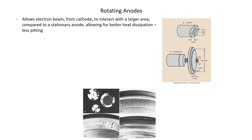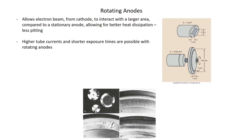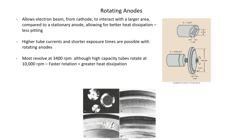Rotating anodes allow the electron beam from the cathode to interact with a larger area compared to a stationary anode, allowing for better heat dissipation and less pitting. You can see examples of anodes whose faces have been pitted. Rotating anodes also allow for higher tube currents and shorter exposure times. Most revolve at 3,400 RPM, although high-capacity tubes rotate at about 10,000 RPM — faster rotation means greater heat dissipation.